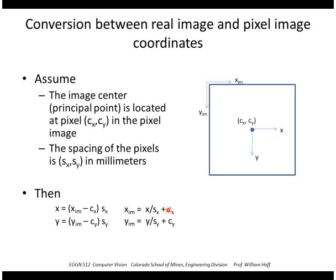Or conversely, if we had the image plane coordinates X, Y, we could divide by SX, SY, and add in that offset to the center, and that would give us the image buffer coordinates X_im and Y_im.